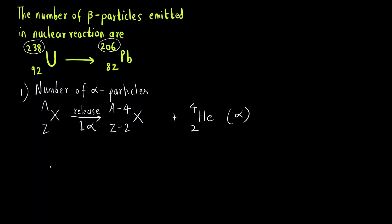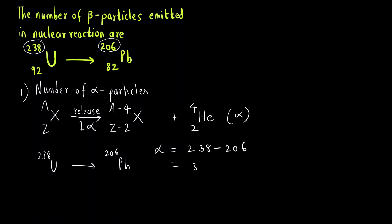Here, Uranium-238 is being converted to lead-206. To find how many alpha particles are emitted, we subtract: 238 minus 206 equals 32. Since each alpha particle decreases the mass by 4 units, we divide 32 by 4, giving us 8 alpha particles released.